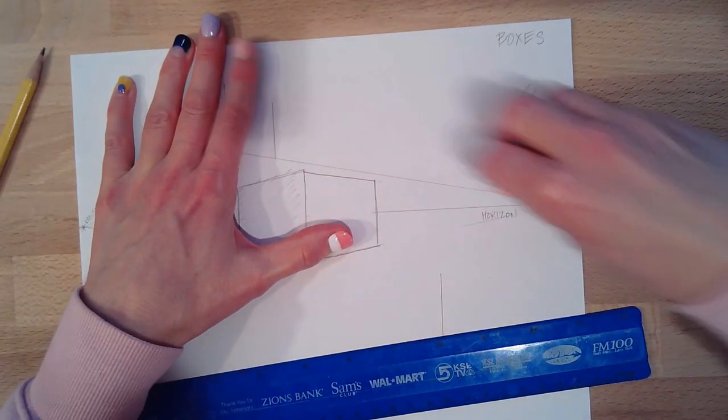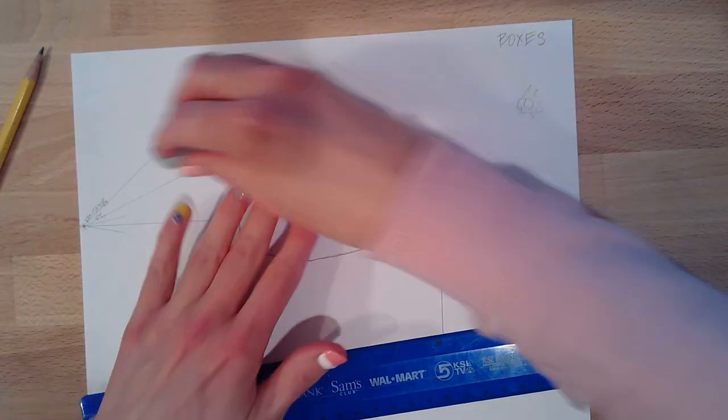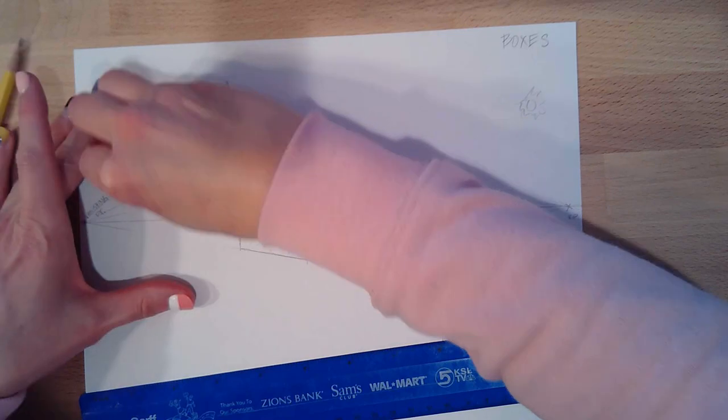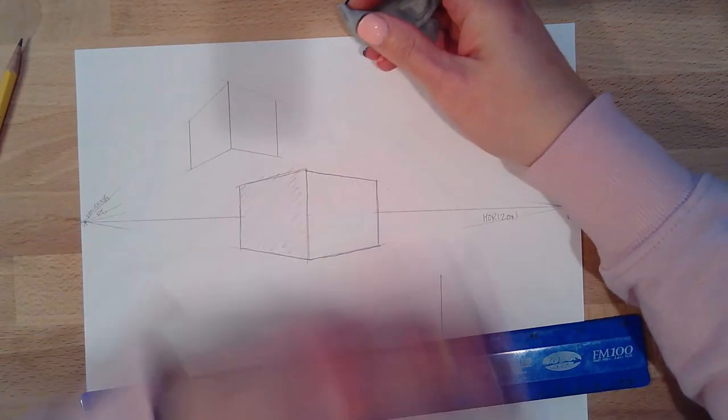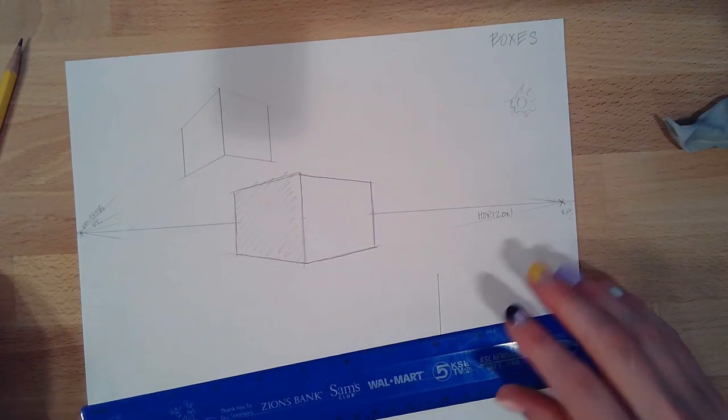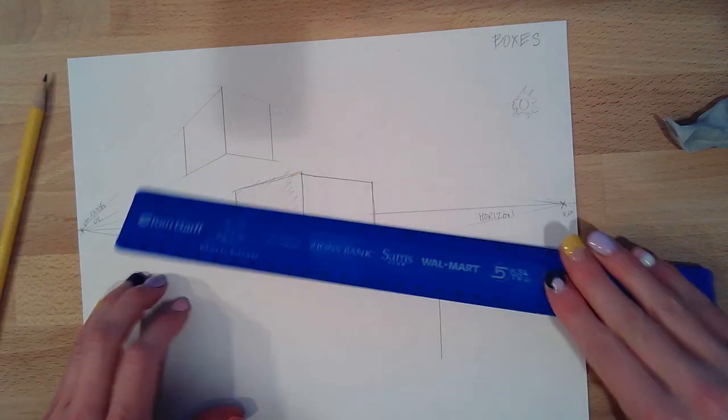Now I want to erase these lines solely because too many lines gets a little confusing. And I can draw these a little bit darker, but I don't want to do that right now. I'll do that later.